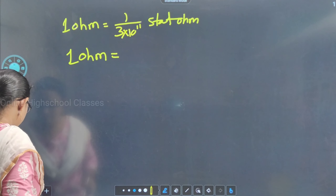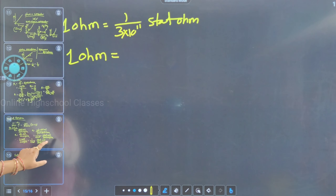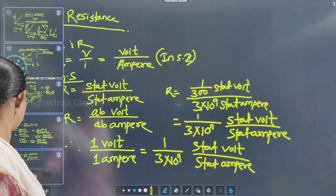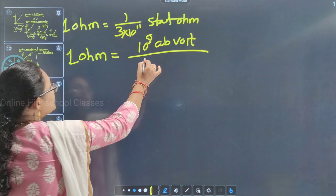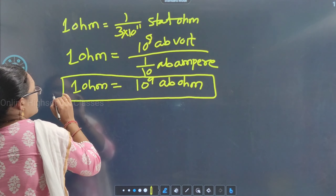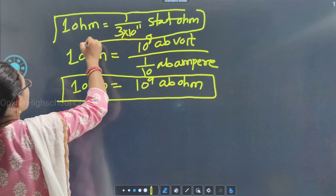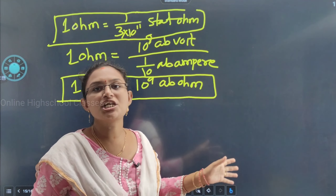Also, 1 ohm equals 10⁹ EMU (ab-ohm), since 1 volt = 10⁸ ab-volt and 1 ampere = 1/10 ab-ampere, so 1 ohm = 10⁸ ab-volt / (1/10 ab-ampere) = 10⁹ ab-ohm. These are the relations between the different units of resistance.